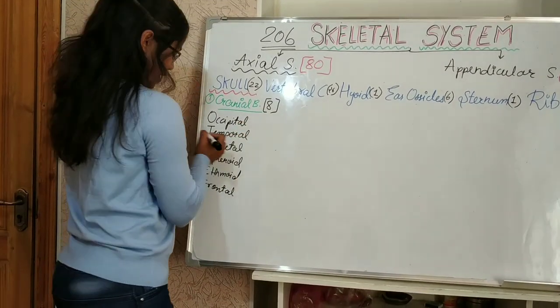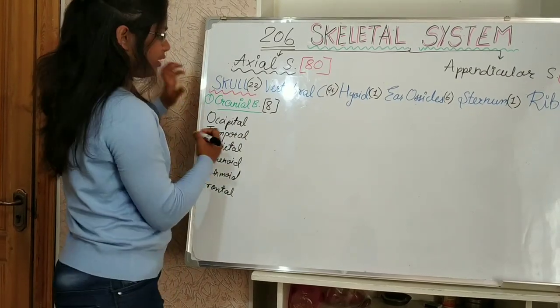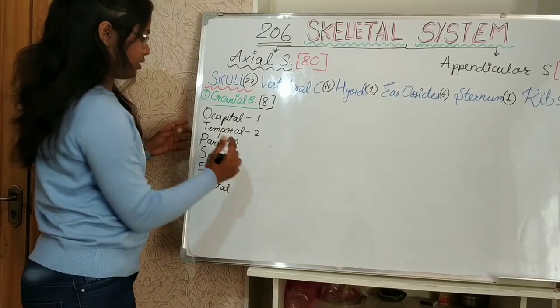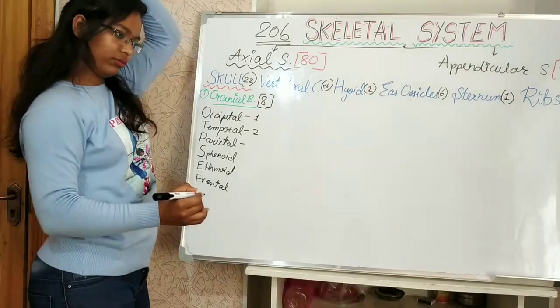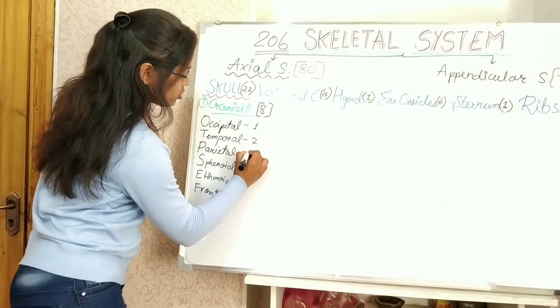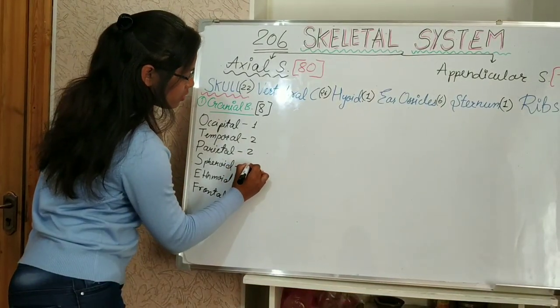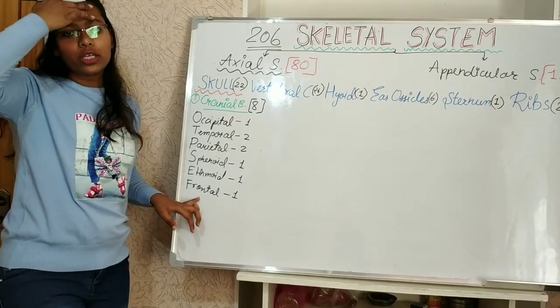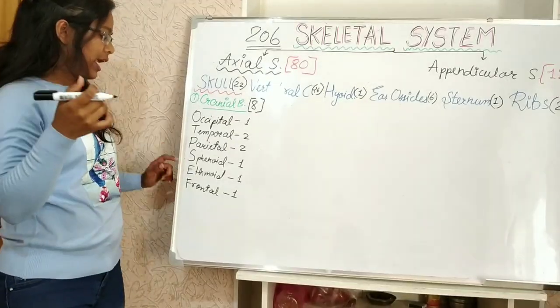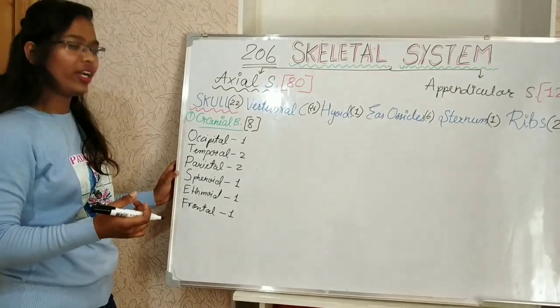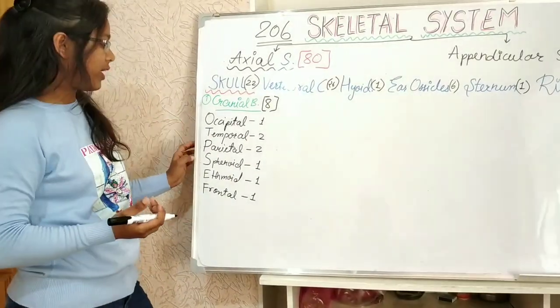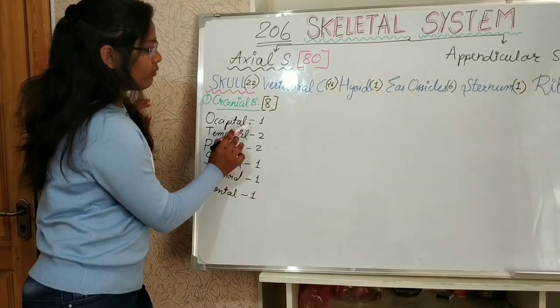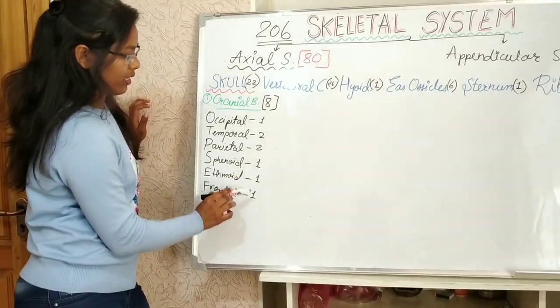This bone is frontal bone. Occipital bone is here located, it is 1. Temporal it is 2, it is sidewise located. Parietal we have like here, it is also 2. Sphenoid is also 1. Ethmoid 1, and frontal also 1. Ethmoid bone is located in center, and sphenoid is also located in center. It is butterfly shaped bone. So total 8 bones.